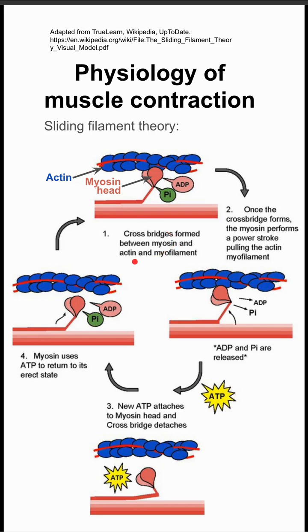Cross bridges form between the myosin and actin, and they connect here, allowing the filaments to slide past each other.